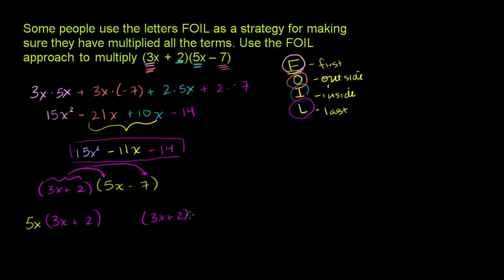So that's just that times that. And then you're going to have plus (3x + 2) times the second term, times negative 7. I could just put a plus here and a negative 7, or I could say it's negative 7 times (3x + 2). So it's 5x times (3x + 2) minus 7 times (3x + 2). This was just the distributive property.